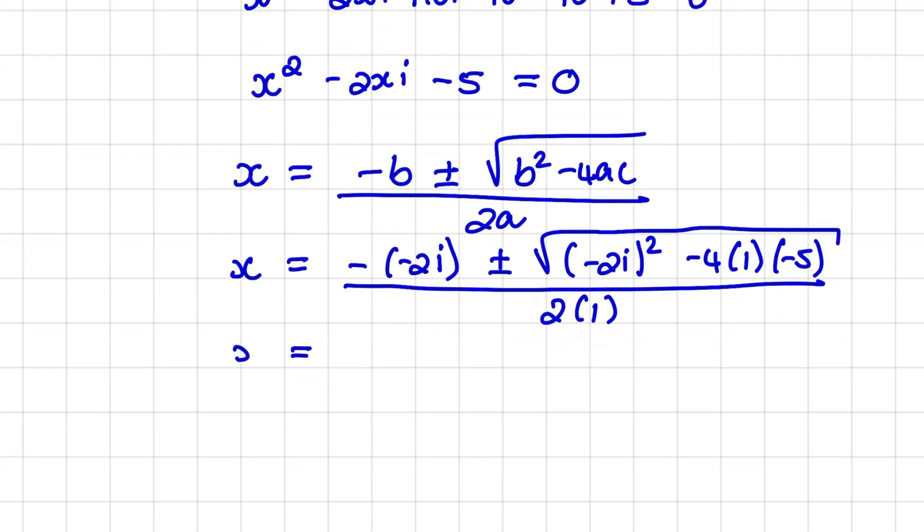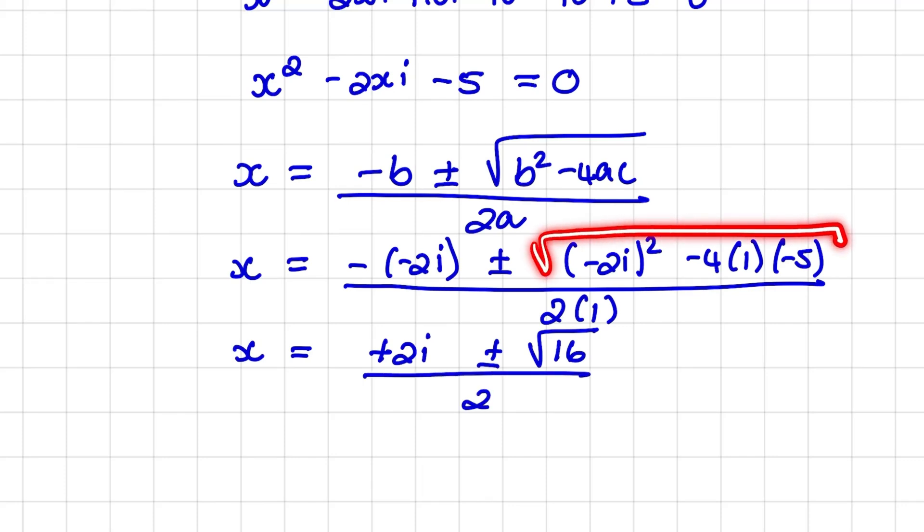And I take the square root of that and I divide that by 2 times 1. Now, when we simplify further, we have plus 2i plus minus the square root of 16 over 2. So let us focus on what happens on the square root. We have negative 2i squared.